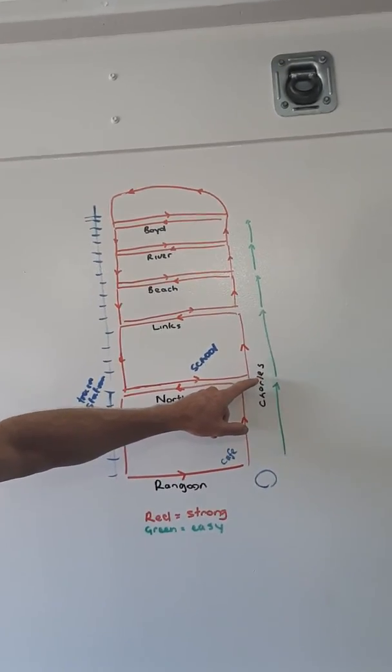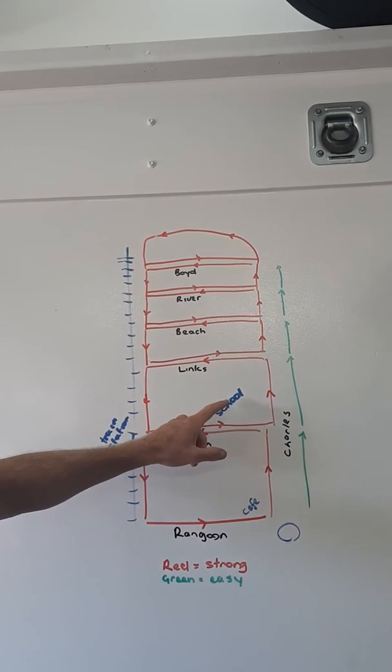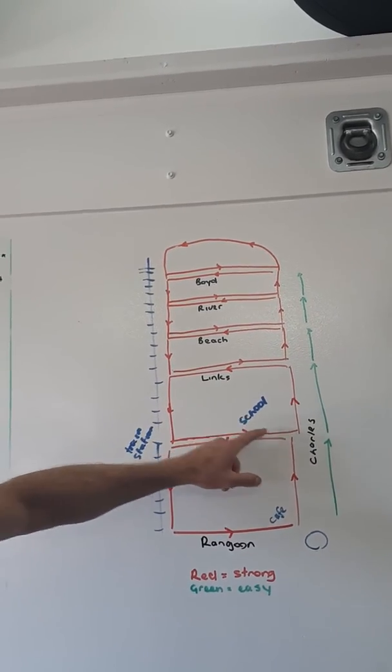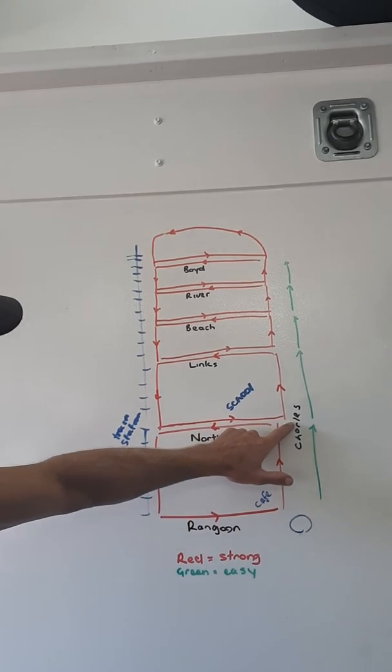Then from there, you run strong around this block, which is the block where the school is. Once you've finished back here, you're running strong around here and finish here again.